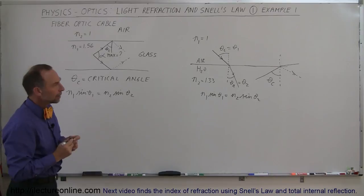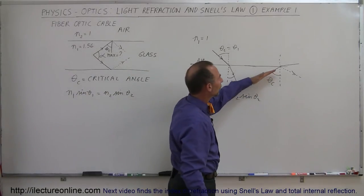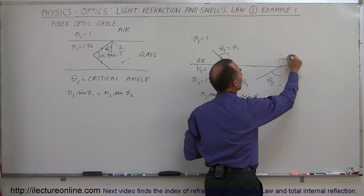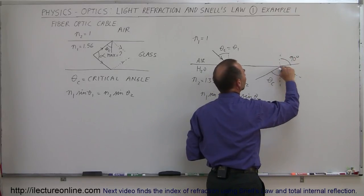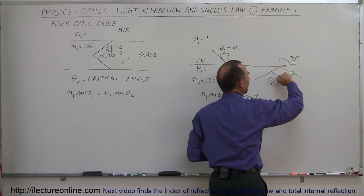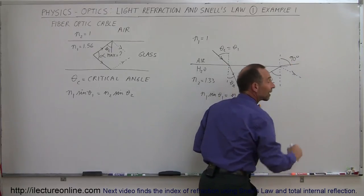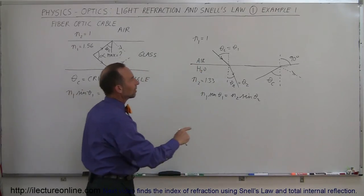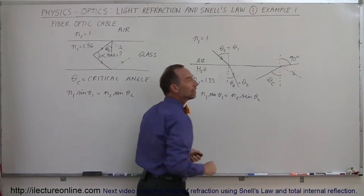The way we find the critical angle is by increasing this angle to the point until this angle right here becomes a 90-degree angle. At that point, the light will no longer leave the medium. It'll skim along the edge and if we make the angle any bigger than that, it will simply reflect back inside the medium. So to find the critical angle, we set the exiting angle equal to 90 degrees.